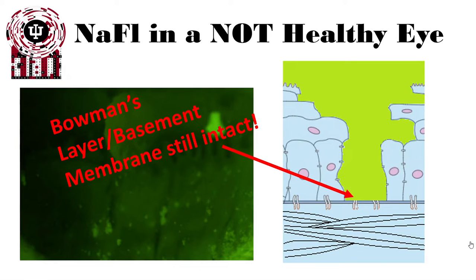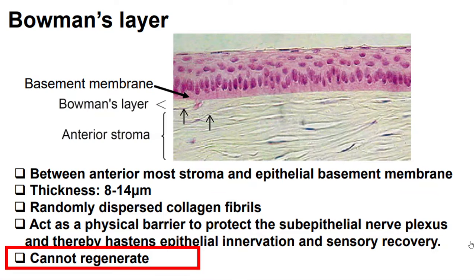As long as Bowman's layer and the basement membrane remain intact, we see regular punctate or confluent fluorescing images on the cornea. Reviewing Bowman's layer anatomy: it lies between the anterior stroma and the epithelial basement membrane, has a thickness of about 8 to 14 microns, and consists of randomly dispersed collagen fibrils. It acts as a physical barrier to protect the sub-epithelial nerve plexus. Critically, it cannot regenerate, meaning a break through Bowman's layer results in a scar.